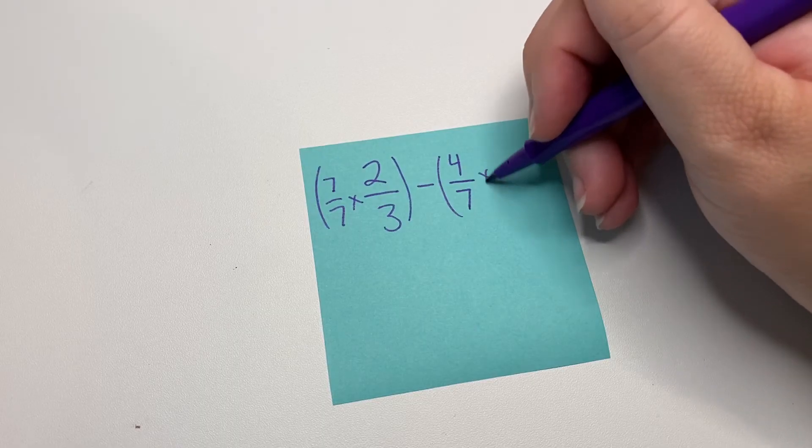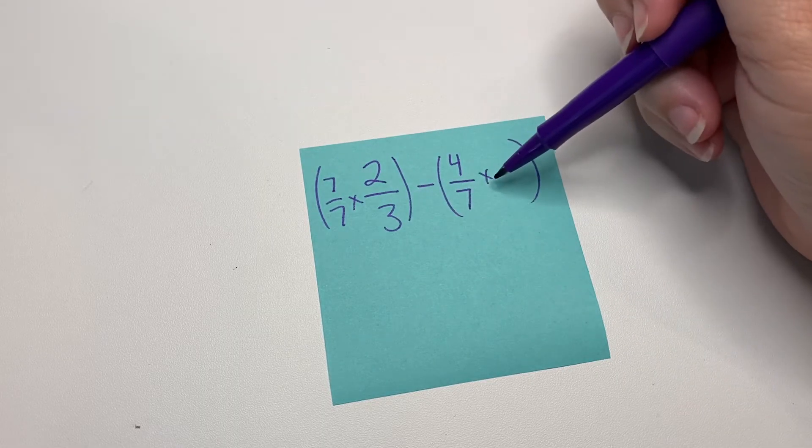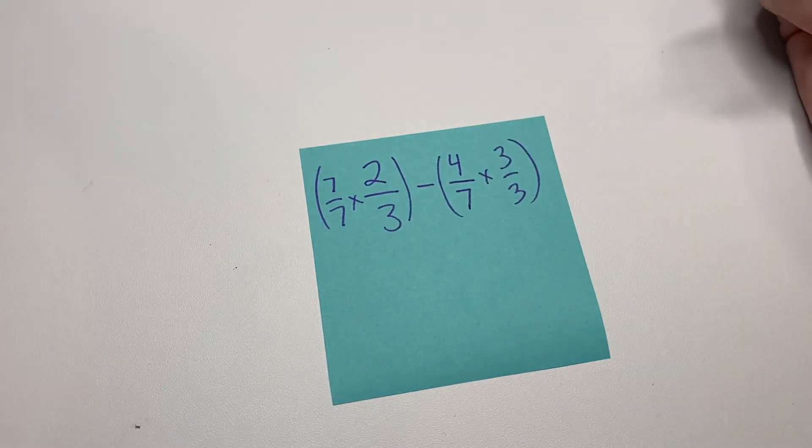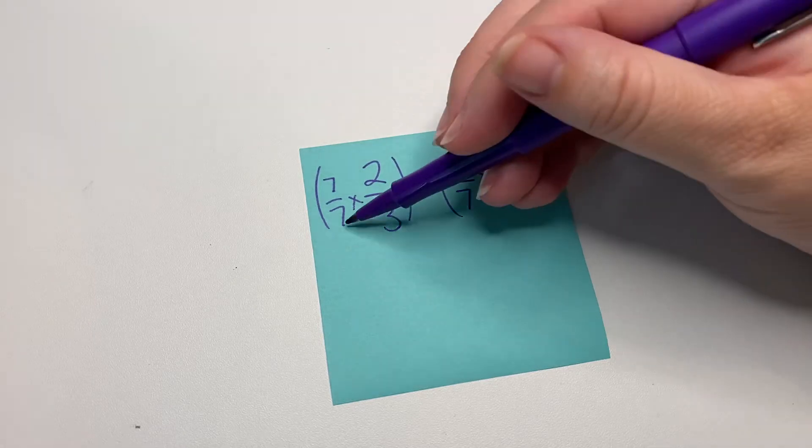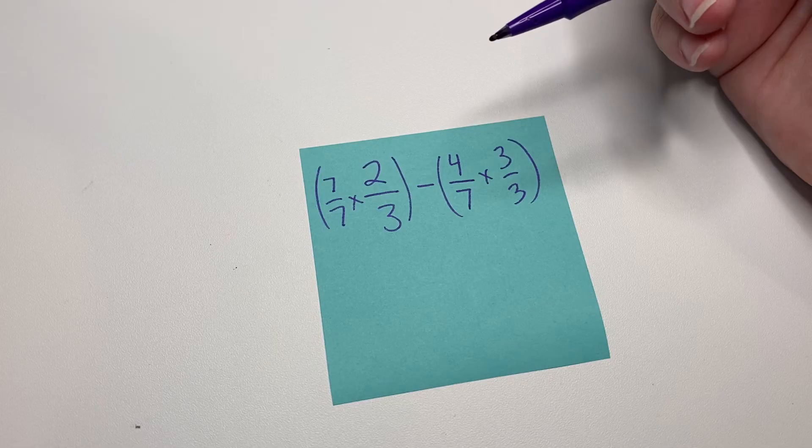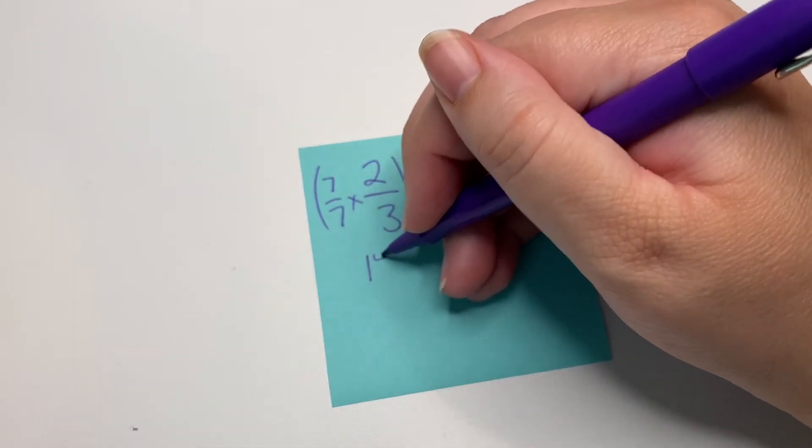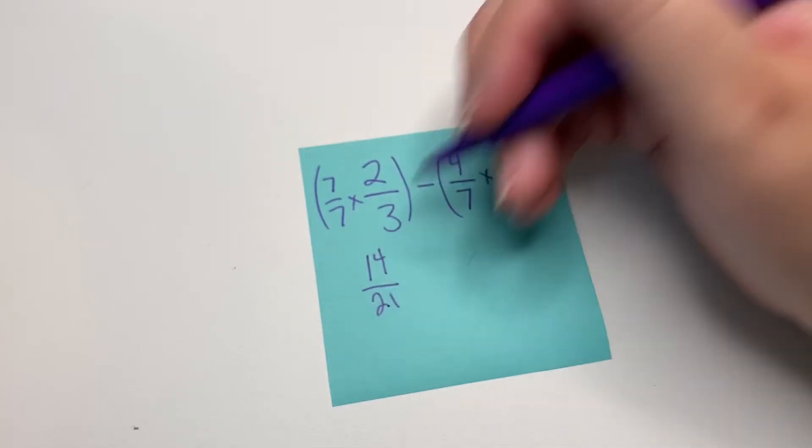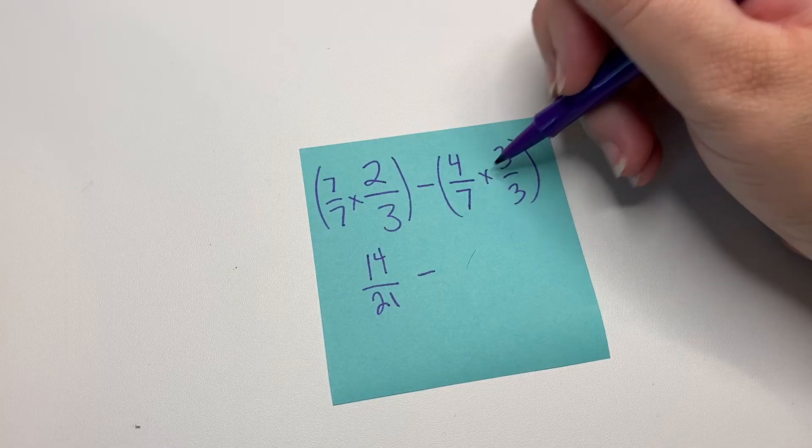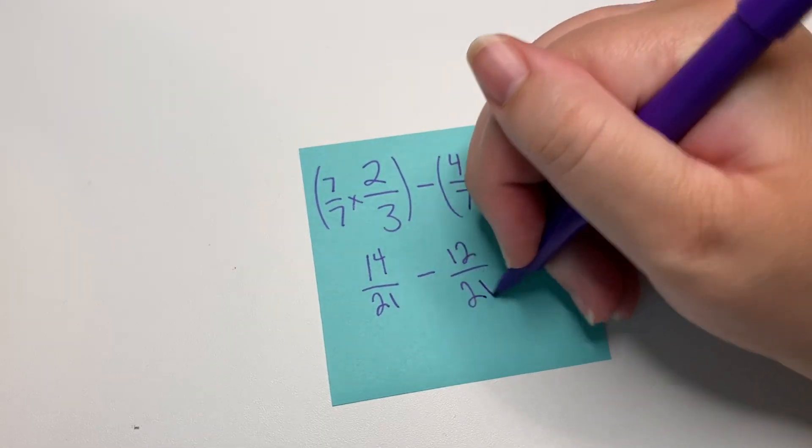And on this side, we're going to multiply it by three over three, because the denominator on the left is three. And you can see how you got a seven times three and a seven times three, which means you're going to end up with the same denominator. So seven times two is 14 and seven times three is 21. Still keep our subtraction. Four times three is 12. And seven times three is 21.